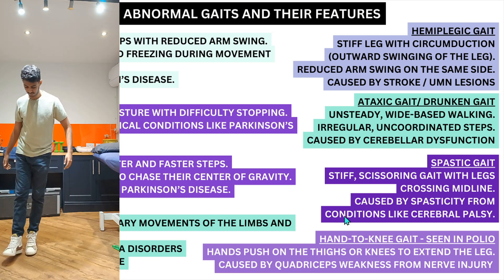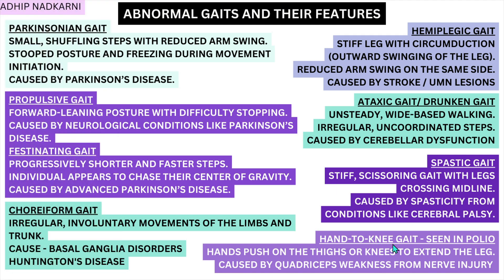Next is spastic gait — a stiff scissoring gait with legs crossing the midline, caused by spasticity from conditions like cerebral palsy. Finally, hand-to-knee gait is seen in polio: because the quadriceps cannot perform knee extension, the person uses their hand to push the thigh or knee to extend the leg, manually compensating for quadriceps weakness from the nerve injury seen in polio. The person essentially takes over the function of the quadriceps by doing it manually.